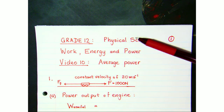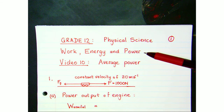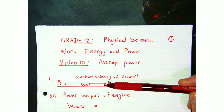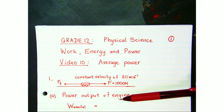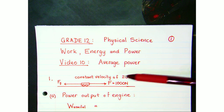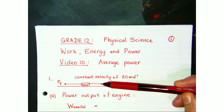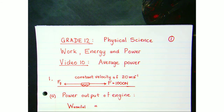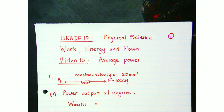This is video 10 in the grade 12 chapter on work, energy and power. In this video we're going to look at average power — for example, the average power developed by a car engine. We have a car moving at constant velocity of 20 meters per second, and we want to know what the power output of the engine is to maintain that velocity. To calculate power, we obviously need the work done.